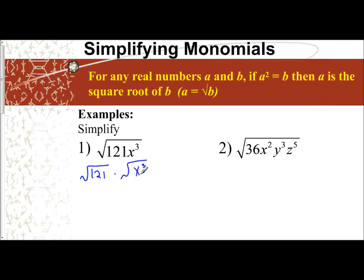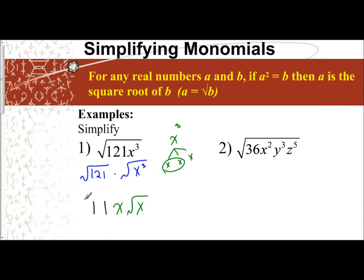So I break apart the 121 and the x cubed, then simplify them separately. The square root of 121 is a perfect square — it's 11. Then let's try the prime factorization technique with x cubed. x cubed means we have x times x times x, so I have one pair of x's with one x remaining inside. My final answer is 11x radical x. When I had an exponent of 3, I was able to take out one pair of x's, but there was still one remaining inside.